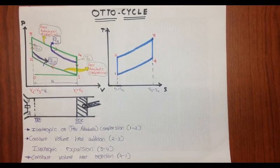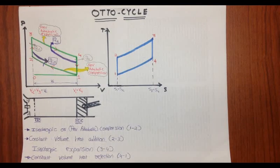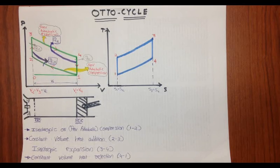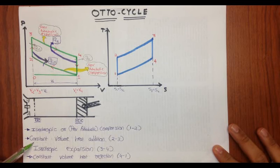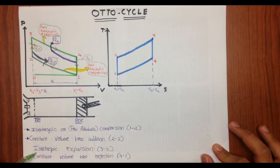Now let us study the PV diagram (pressure vs. volume) and the temperature vs. entropy diagram of an SI engine. The Otto cycle is the ideal cycle for spark ignition reciprocating engines and serves as a theoretical model for the gasoline engine. It consists of four internally reversible processes: isentropic compression, constant volume heat addition, isentropic expansion, and constant volume heat rejection.